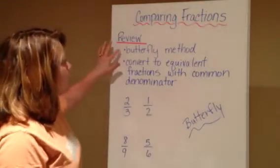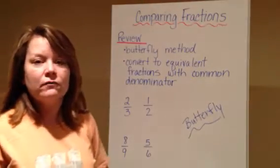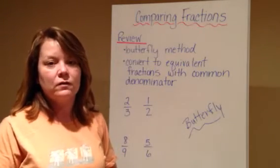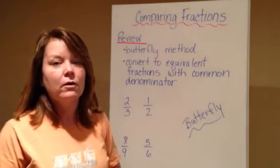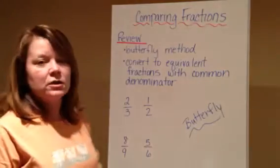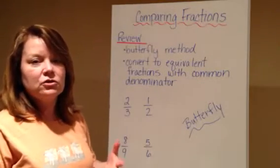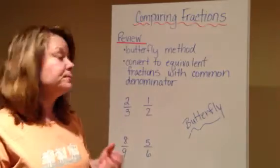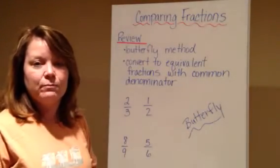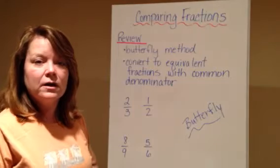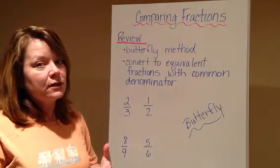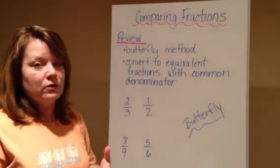One of them was called the butterfly method, which a lot of you seem to enjoy. You thought that method was a lot easier than the other method that we're going to talk about. The second method is actually to convert the fraction to an equivalent fraction with a common denominator so that they both have the same denominator and be able to compare those fractions. So we're first going to take a look at the butterfly method.